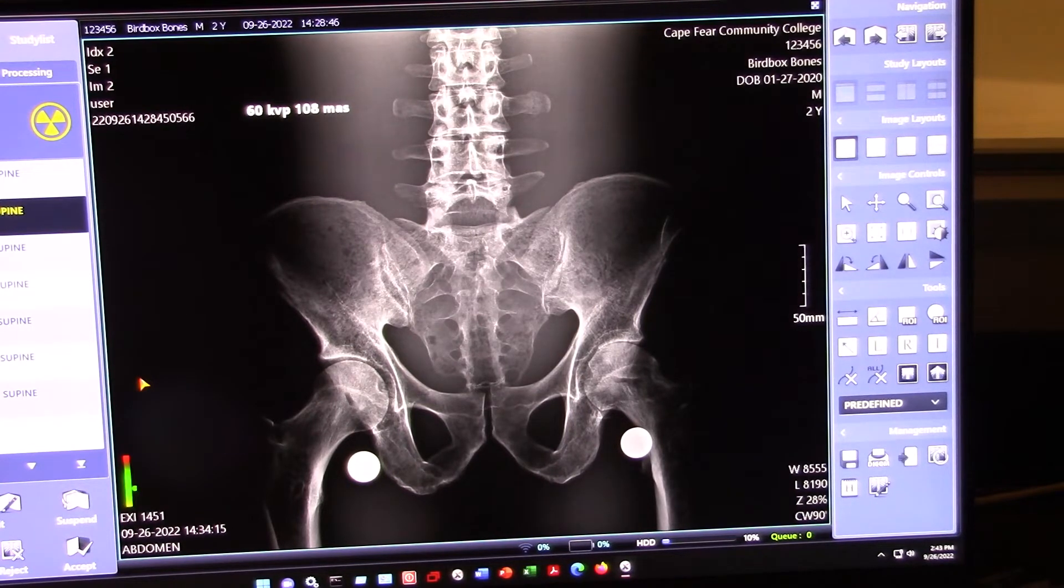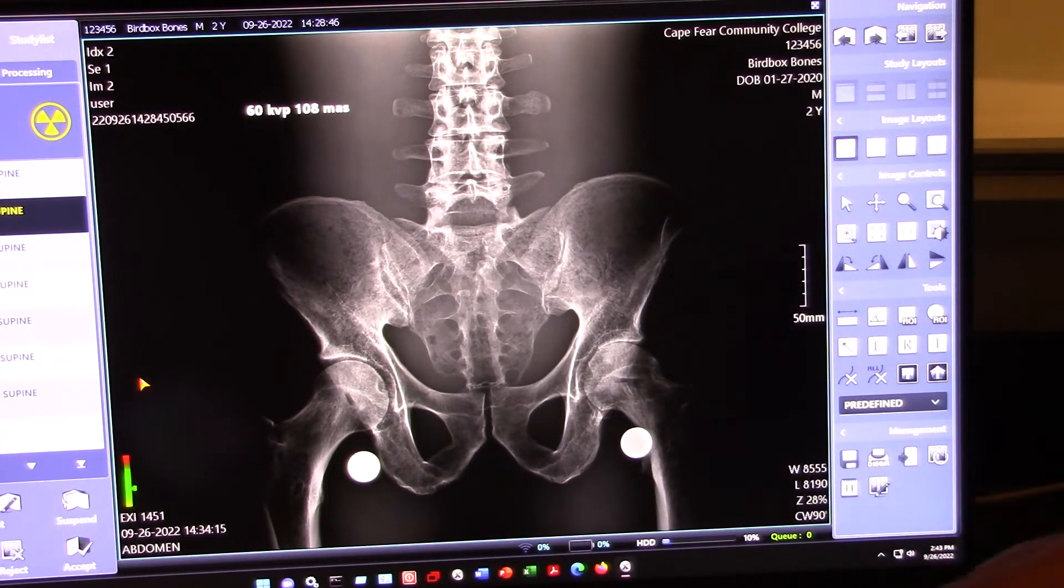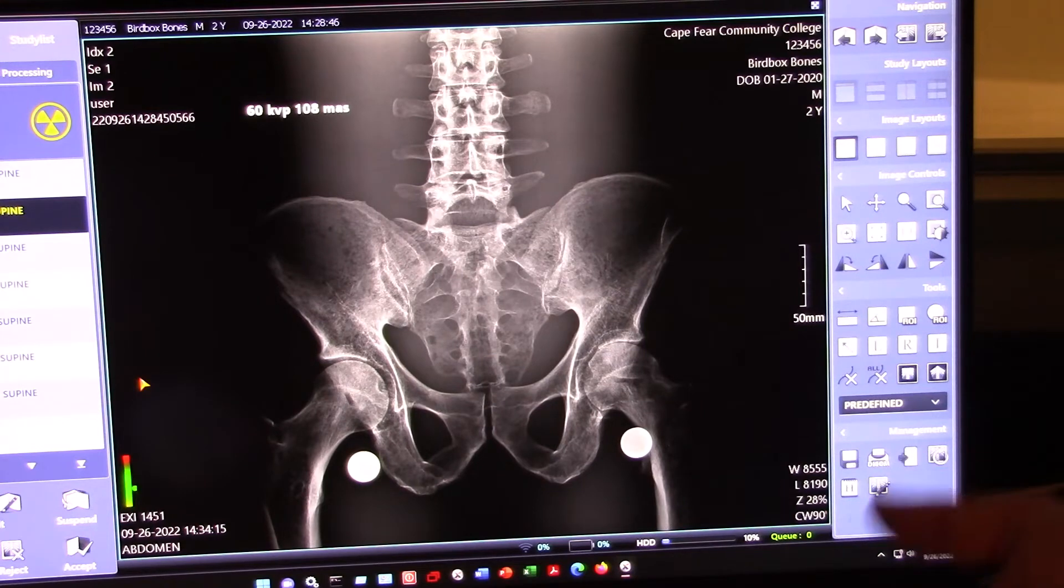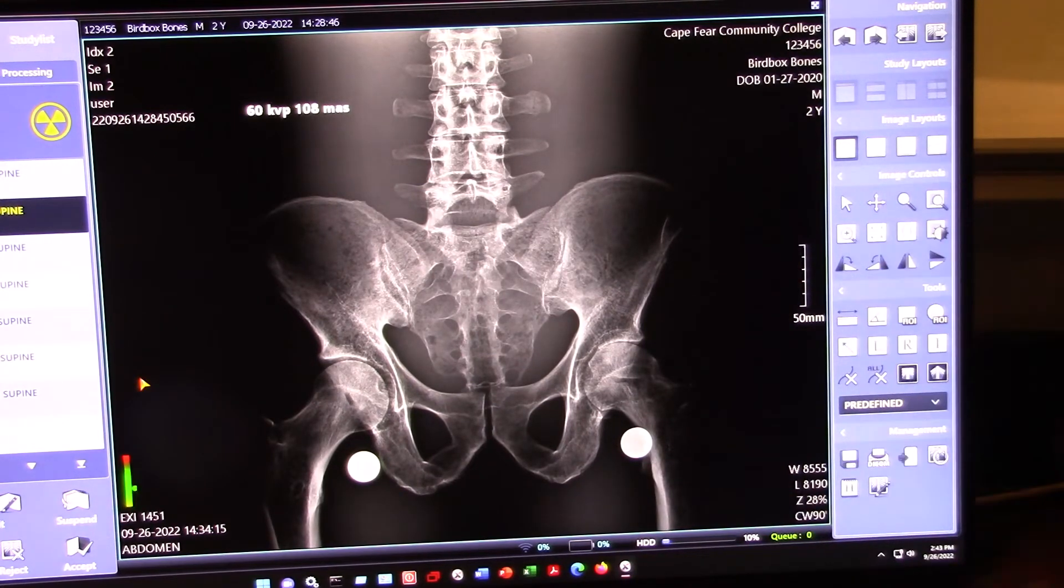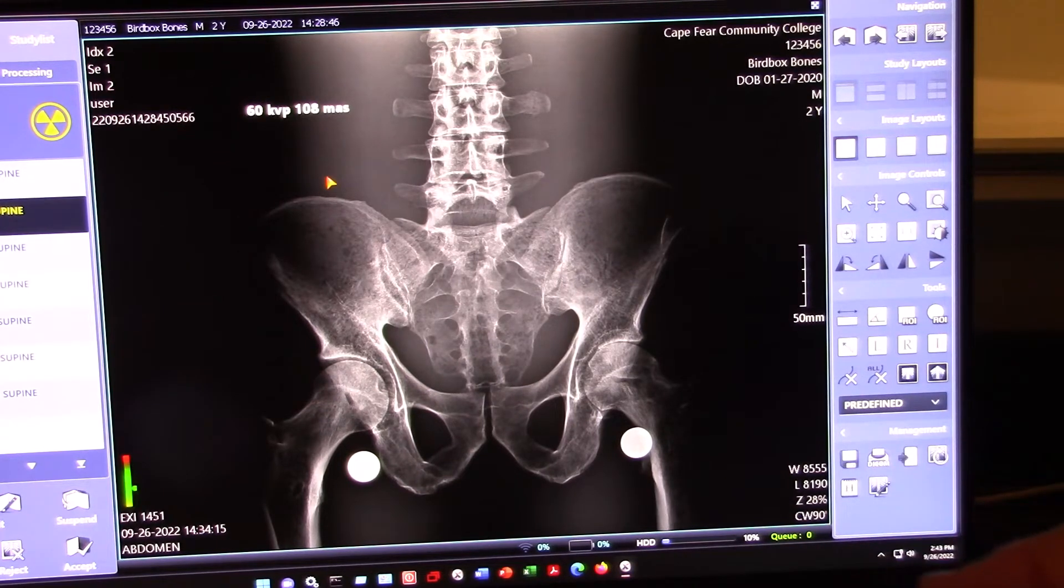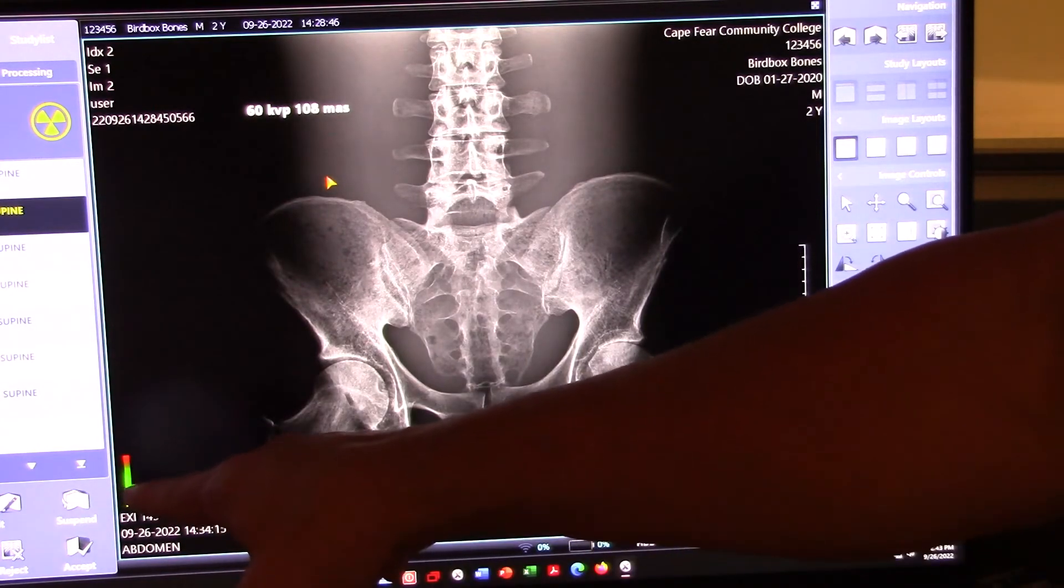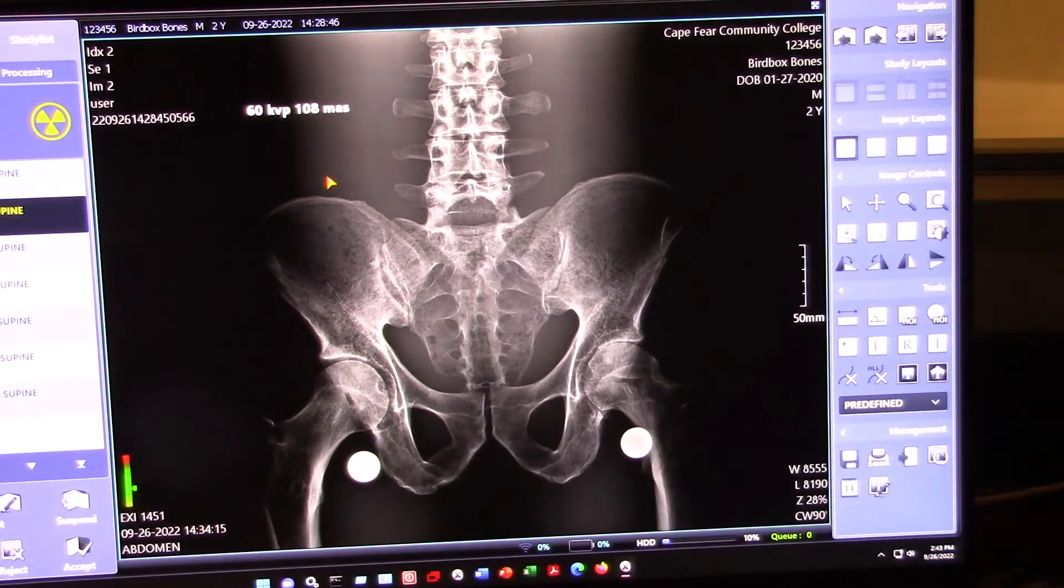And here are our results. Now, I told the computer that what we're doing here is a supine abdomen. So, the computer is trying its best to make our images look like an ideal supine abdomen in its opinion. Okay, so you can see what we've got. This was at 60 KVP and I decided to just use the AEC, the automatic exposure control, and just let the computer decide the mass for me. And as you can see, we're a little underexposed, but we're still in the green. So our exposure index is 1451. The computer was expecting about 1800. So, we're slightly underexposed, but that's okay. We can still see what we need to.